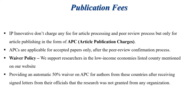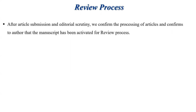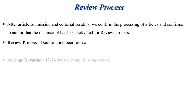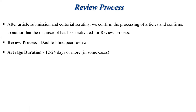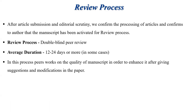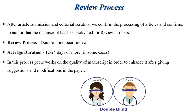After ethical submission and editorial scrutiny, we confirm to the authors that the manuscript has been activated for peer review. A double-blind peer review then occurs, and on average it takes 12 to 24 days, though in some cases it may take longer depending on reviewer availability, type of paper, and responsiveness from authors. Peers work on the quality of the manuscript in order to enhance it by giving suggestions and modifications to improve the paper.